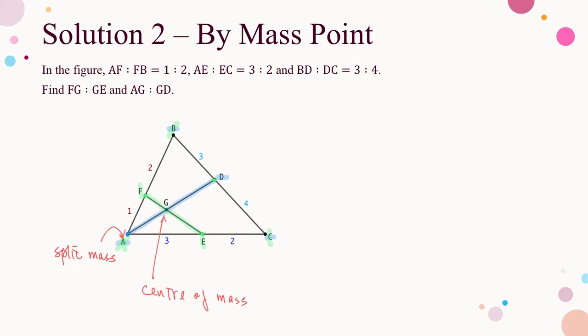The parcel mass of A counted for the mass of E is assigned by the ratio on side AC, and the other parcel mass of A is for side AB. This is the idea of split mass. Referring to the ratio on BC — BD to DC is 3 to 4 — assign a mass of 4 to B and a mass of 3 to C, so the total mass at D is 7. To split the mass at A: since AF to FB is 1 to 2 and the mass of B is 4, the parcel mass of A on side AB is 8. Similarly, AE to EC is 3 to 2 and the mass of C is 3, so the parcel mass of A on side AC is 2. The full mass of A is 10.